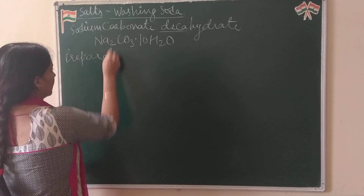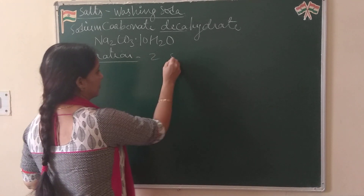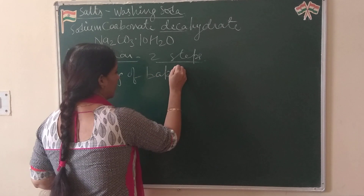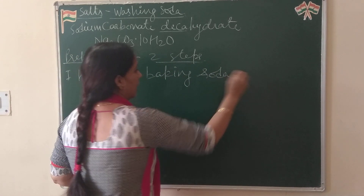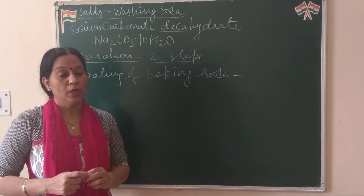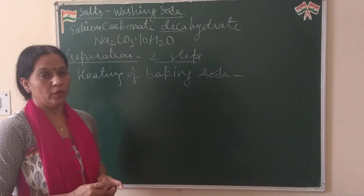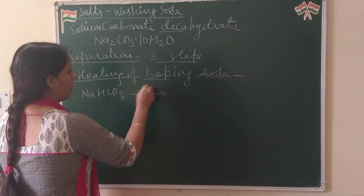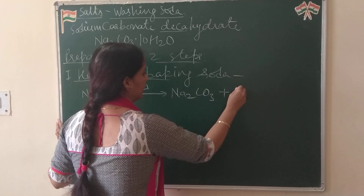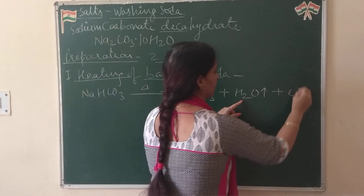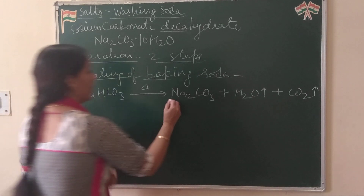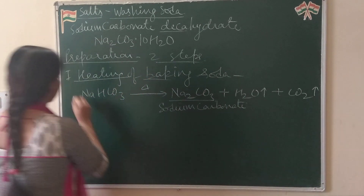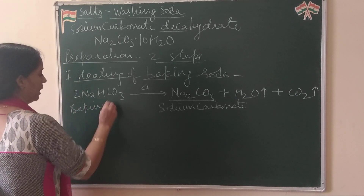So how do we prepare it? It is prepared in two steps. Step 1 is heating of baking soda. If you remember from the previous video, what happens when baking soda is heated? When baking soda NaHCO3 is heated, another important product of industry is obtained — sodium carbonate. So baking soda on heating gives sodium carbonate along with water, which evaporates, and carbon dioxide gas is produced. This gives dry sodium carbonate.